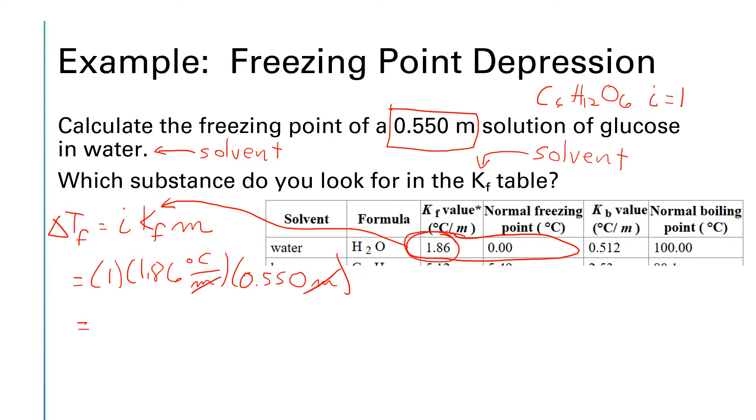This tells us that our delta T sub f will be 1.86 times 0.550 and my calculator is telling me that is 1.023 degrees C. Now that number 1.023 is our delta T sub f. Freezing point is depressed so that's telling us that our freezing point has been lowered by 1.023 degrees C.